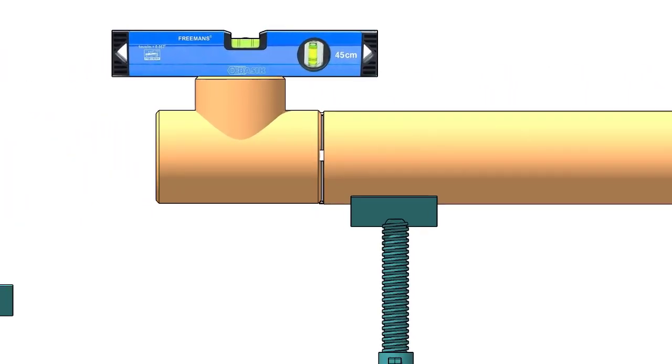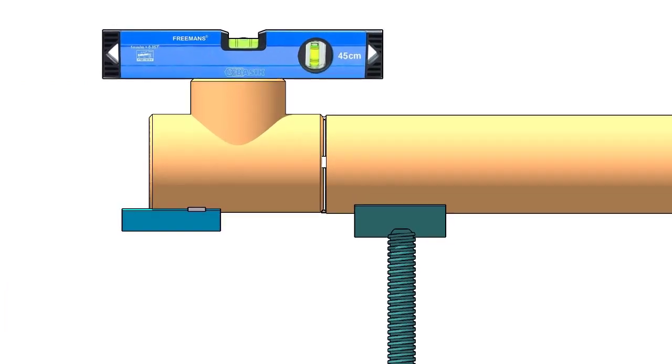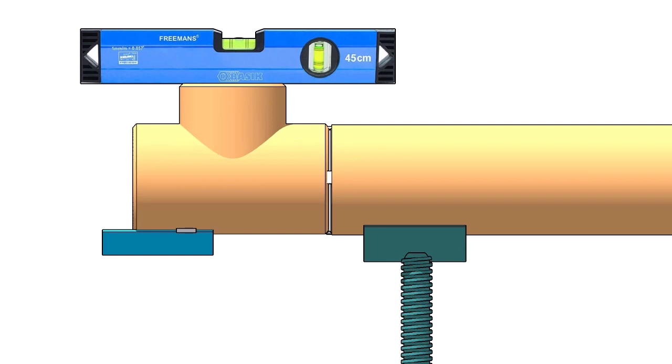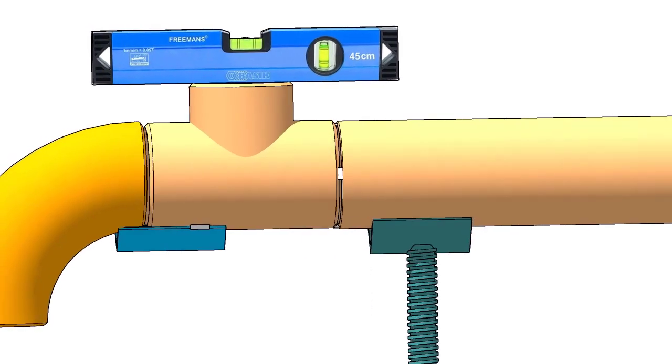Tack weld the piece of angle below the tee if you don't have a ready-made pipe clamp. The size of the angle cleat may vary according to the size of the elbow. Here I am using a 50-50 angle because the pipe diameter is 6-inch.